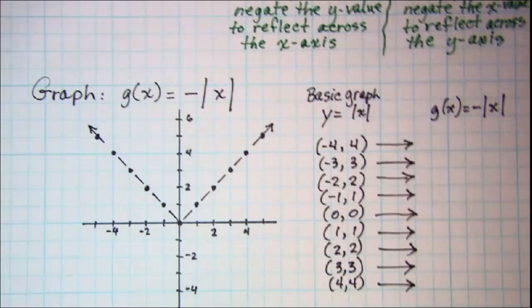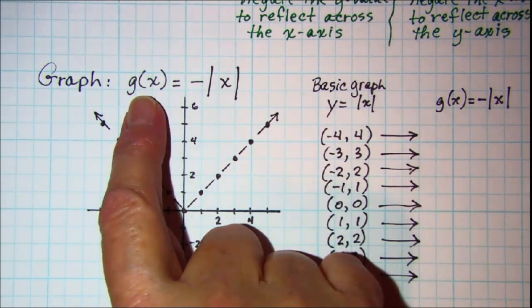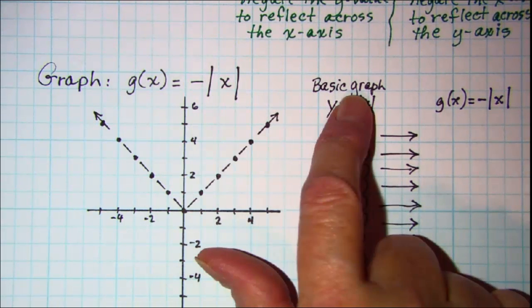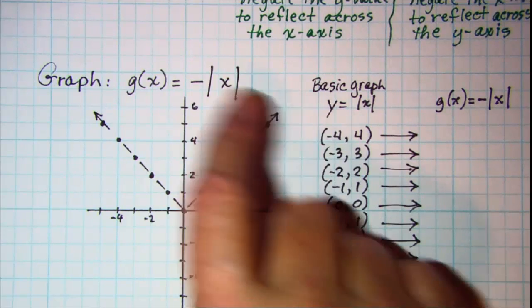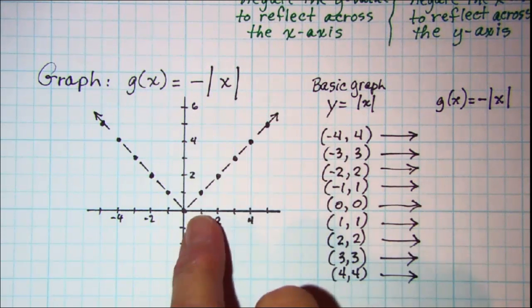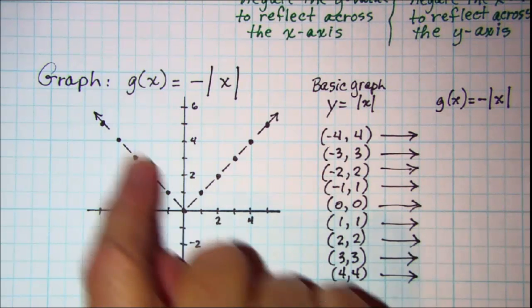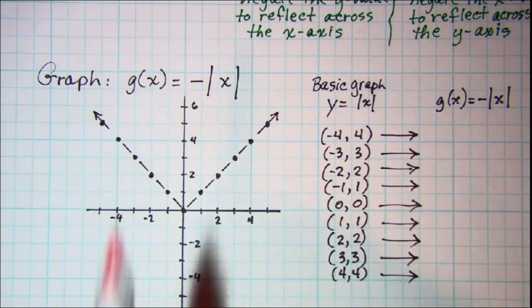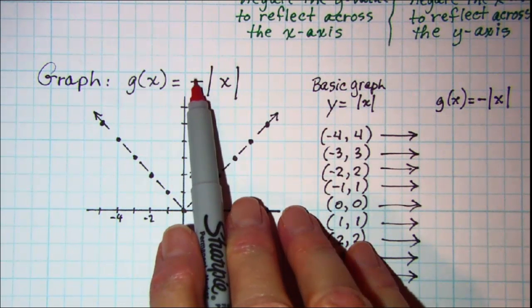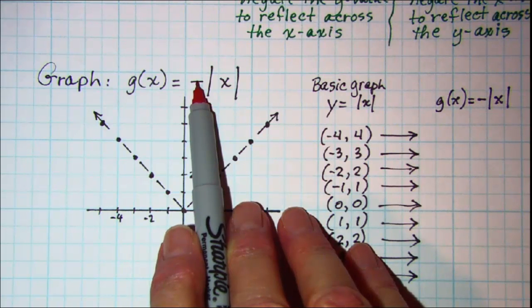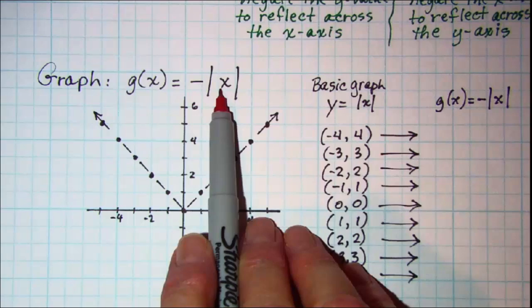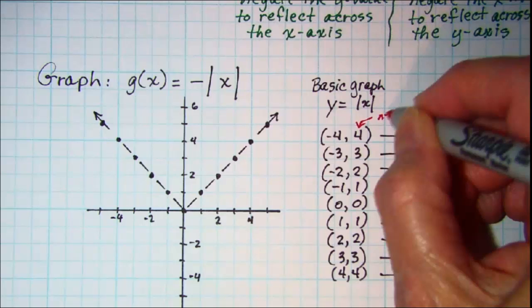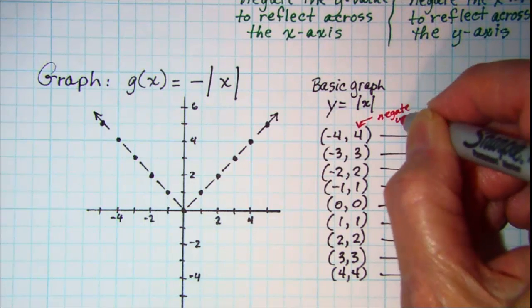Our first example is to graph g of x equals the negative absolute value of x. Now our basic graph is y equals absolute value of x, shown right here. We know that it looks like a V and I've listed some of the points on that graph. Because our negative is out in front of the function, we're negating our y value.